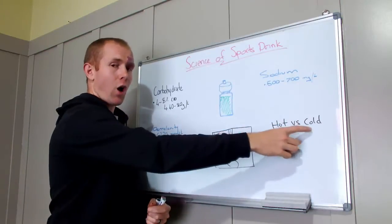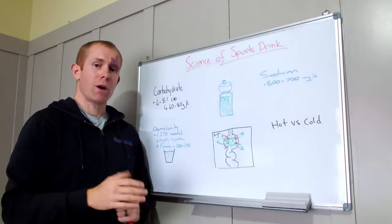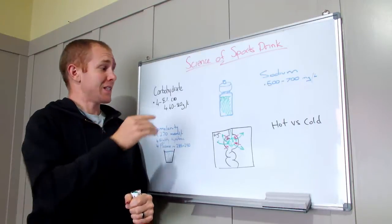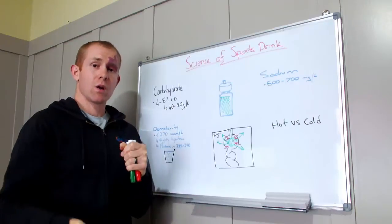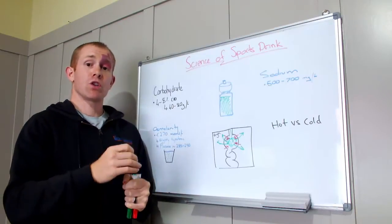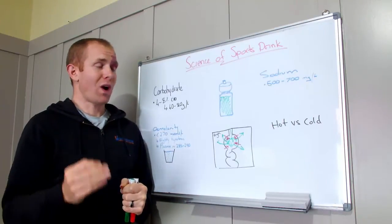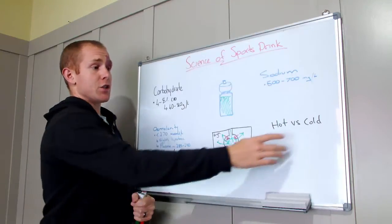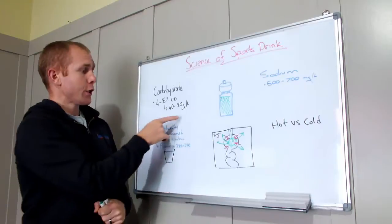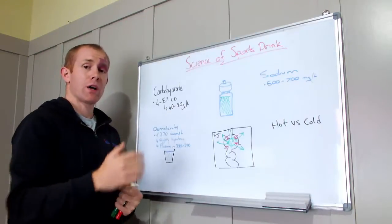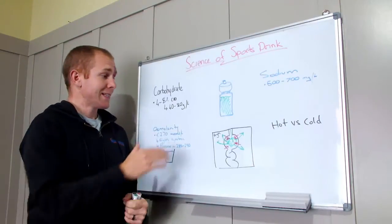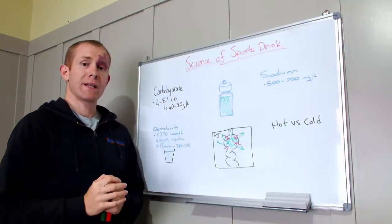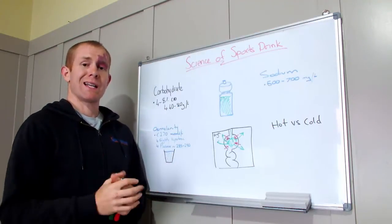Whereas in a cold environment, the thing that's going to limit your performance is carbohydrate. You're going to slow down or stop because you run out of fuel rather than overheating because you're not well hydrated enough. So in a cold environment, you could bump up your carbohydrate content of your drink to the upper levels of the carbohydrate. So as your stomach's absorbing, it's getting more carbohydrate as well.